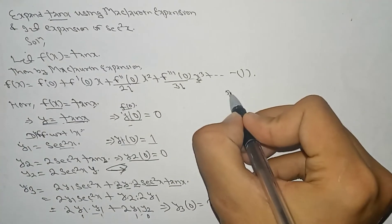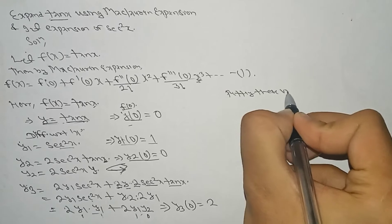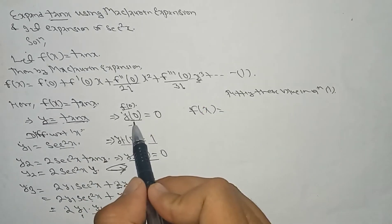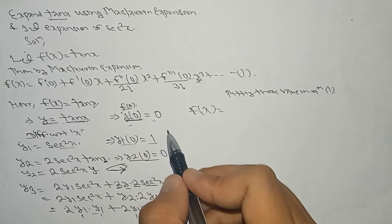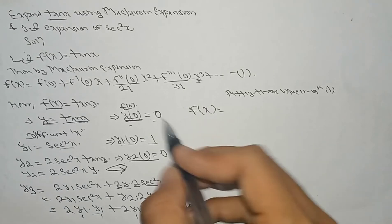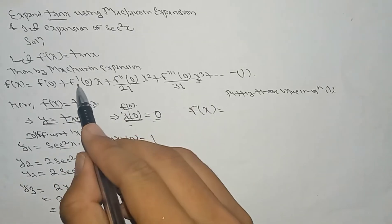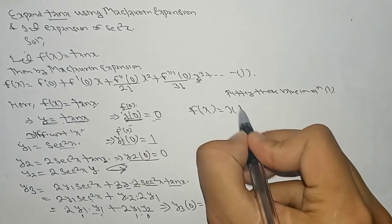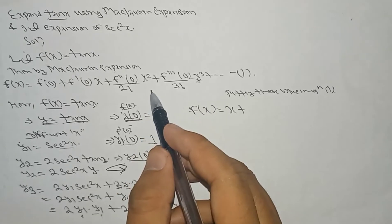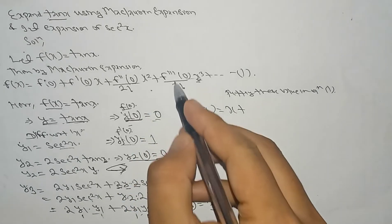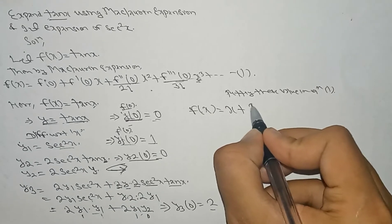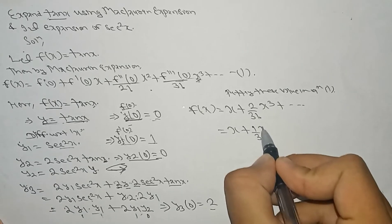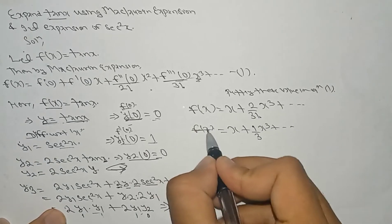Now substituting all values into equation 1: y(x) = y(0) + y1(0)·x + y2(0)/2!·x² + y3(0)/3!·x³. We have y(0) = 0, y1(0) = 1, y2(0) = 0, y3(0) = 2. So: tan(x) = 0 + x + 0 + (2/3!)·x³ = x + (1/3)·x³.